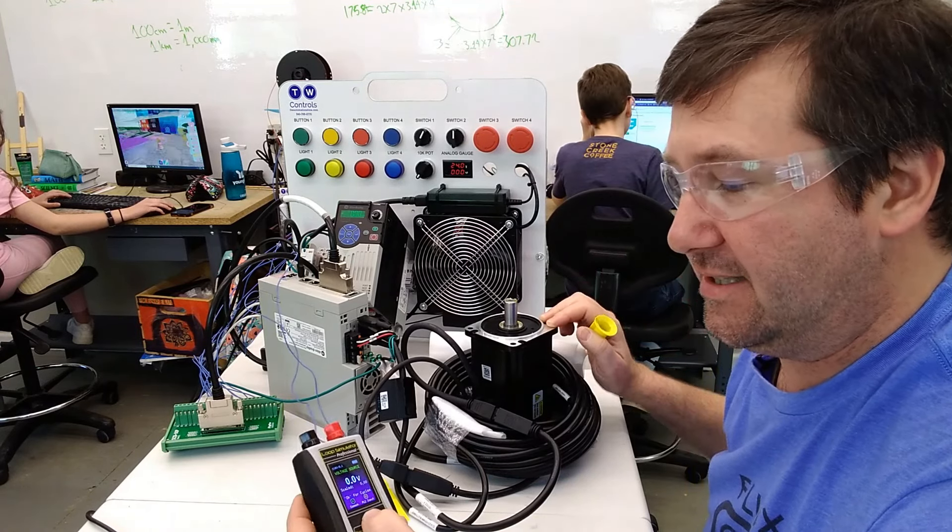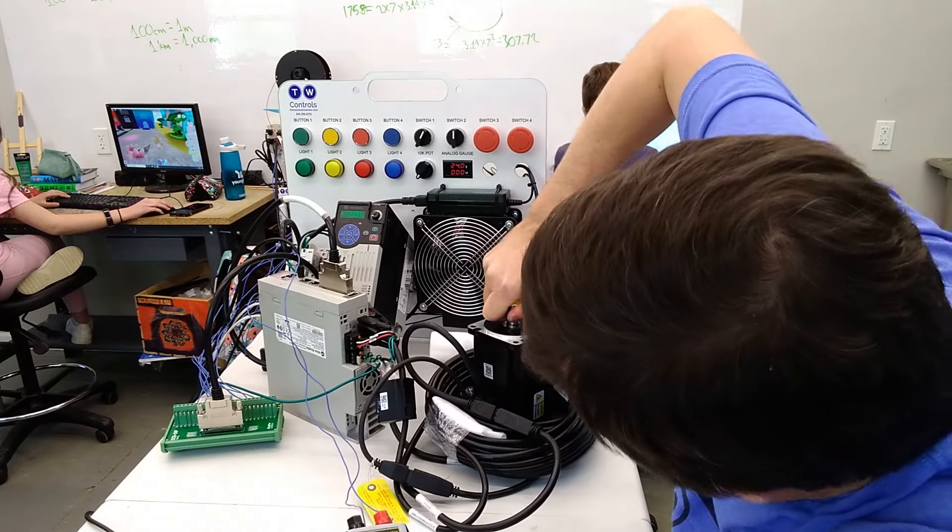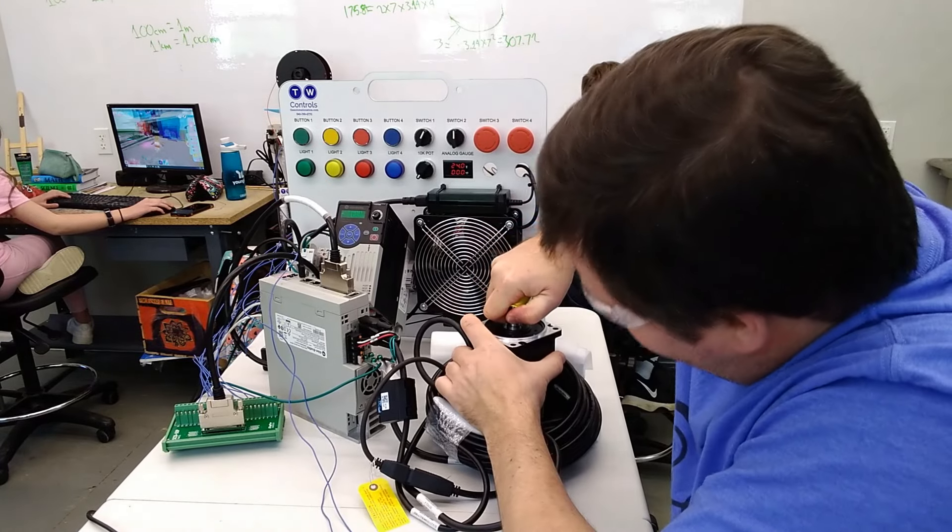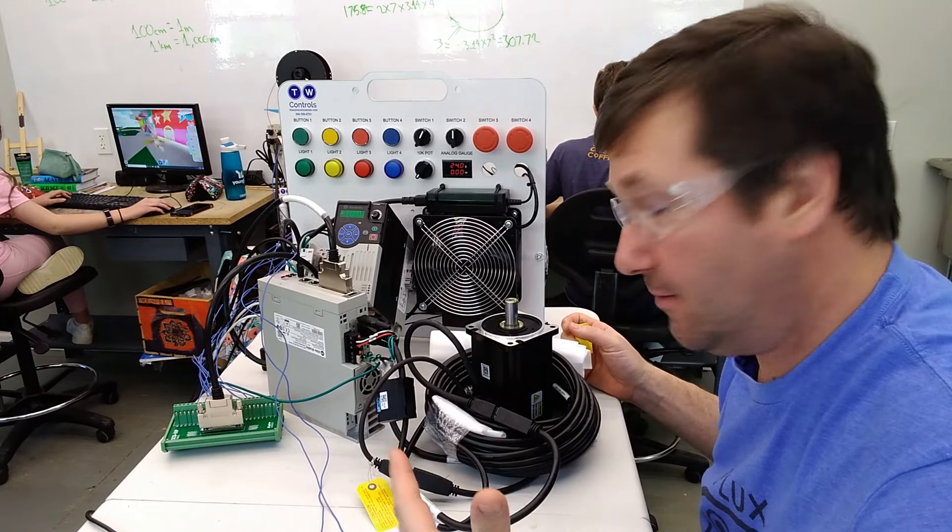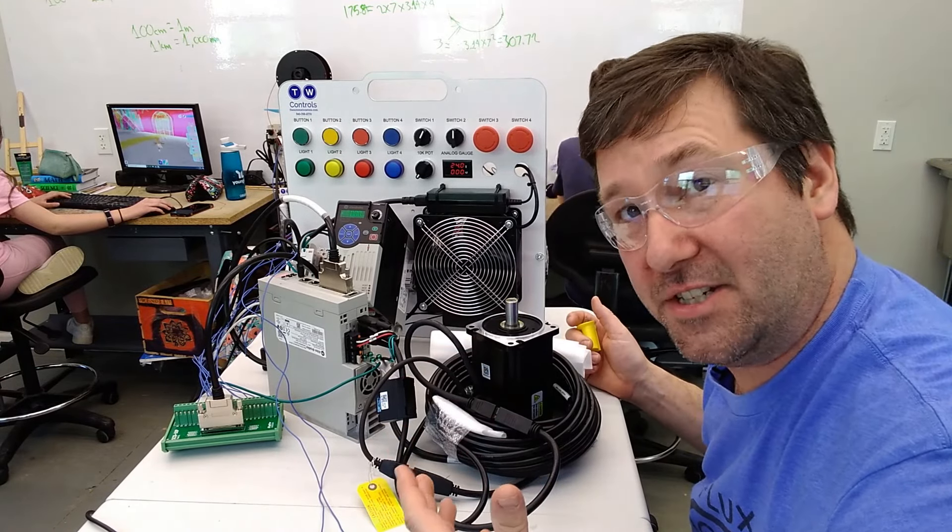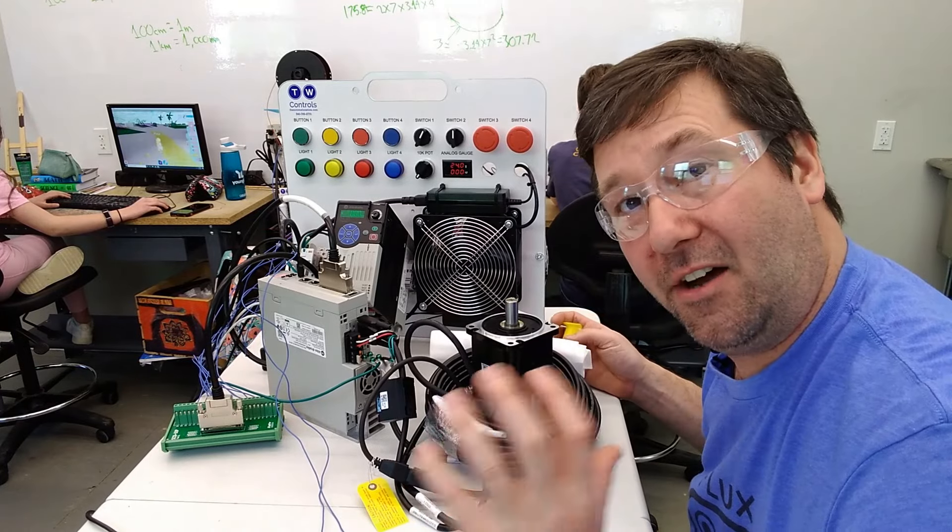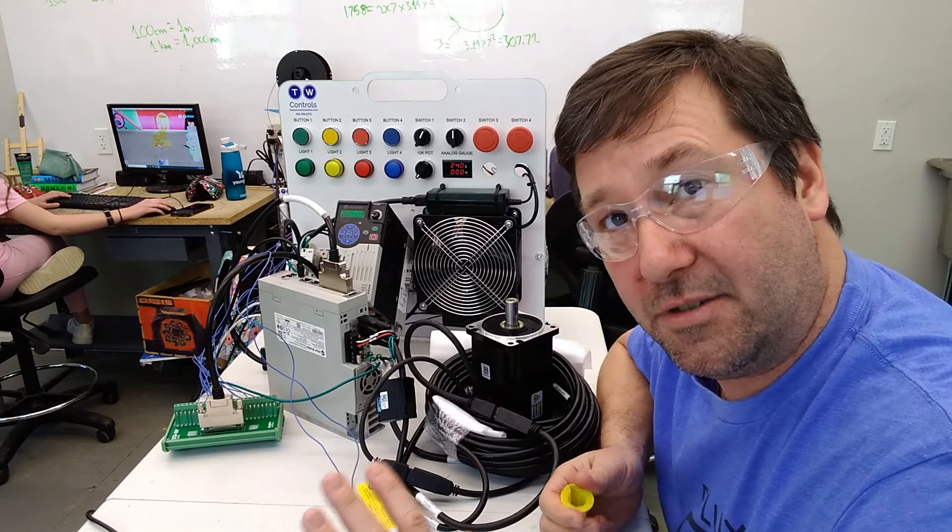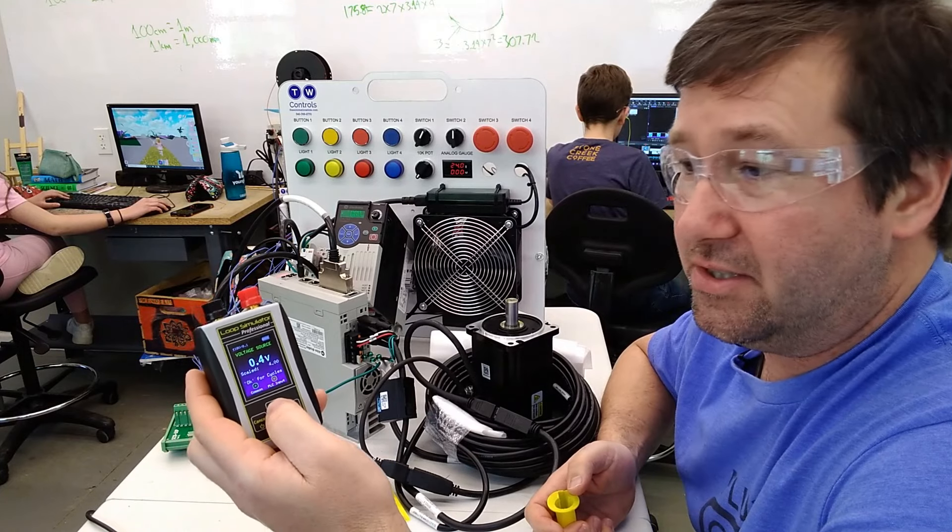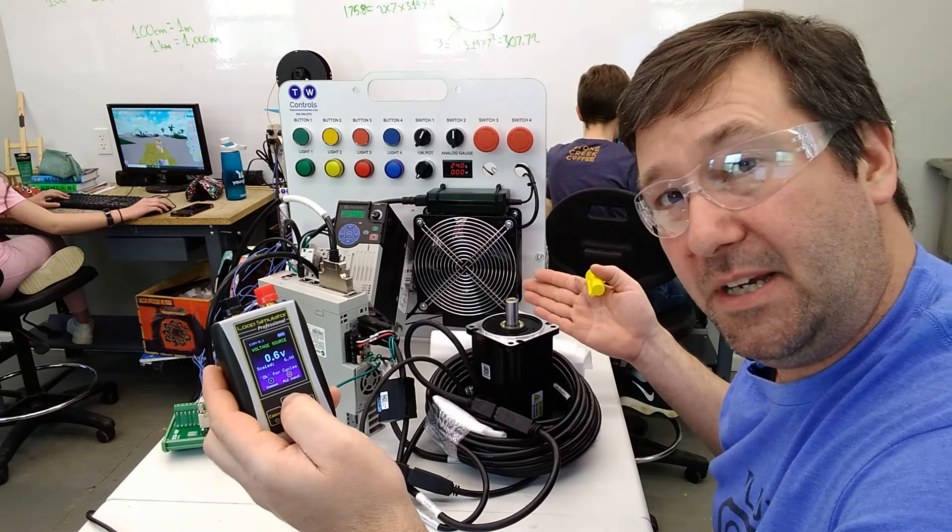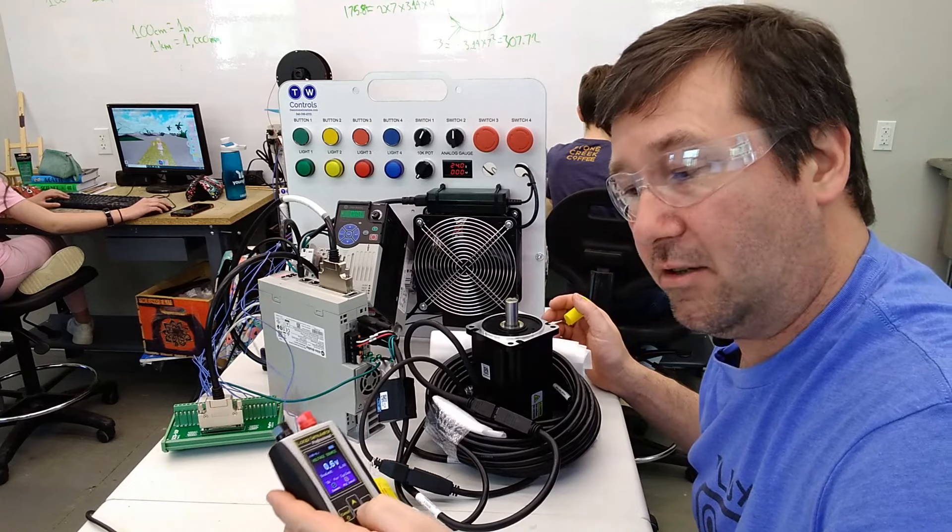Even at zero, you grab it and try to turn the shaft. Unless you have enough power against it to overcome what it's capable of putting out, you will not make that shaft turn. It has 100% torque at zero speed in speed mode. And the analog voltage is exactly that, it is the speed. But there's also another mode you'll see a lot called torque mode.